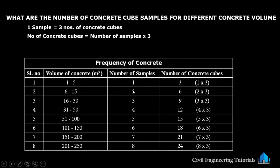In this table, we have the volume of concrete in cubic meters, the number of samples, and the number of concrete cubes. If you are taking a volume of concrete between one and five cubic meters, then you have to take one number of samples. One sample means three numbers of concrete cubes. Number of samples one, multiplied by three, gives three numbers of concrete cubes.